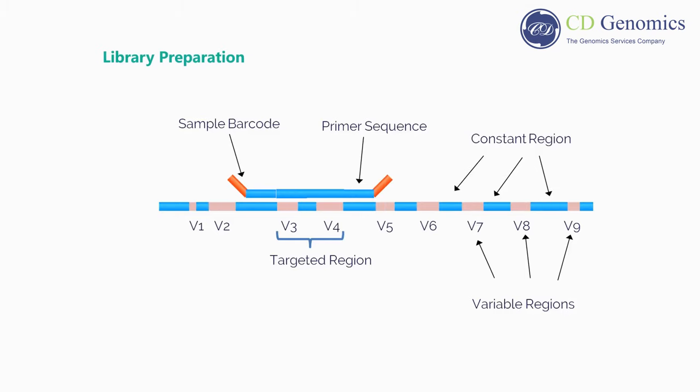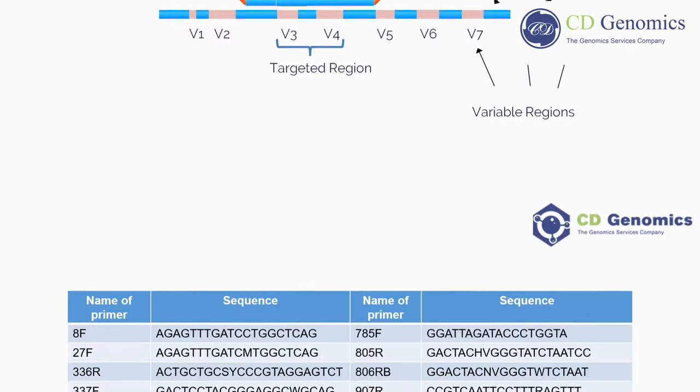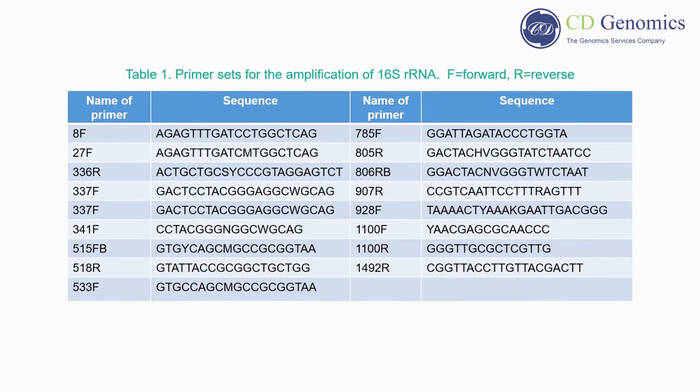Common next-generation sequencing platforms cover 100 to 600 base pairs per single read, with varying degrees of accuracy, but the full-length 16S ribosomal RNA gene consists of approximately 1500 base pairs. Therefore, primers are chosen to cover only a portion of the 16S ribosomal RNA gene. There are several primer pairs commercially available. The full-length 16S ribosomal RNA gene is usually amplified by the pair of primers 27F and 1492R, followed by Sanger DNA sequencing or PacBio SMRT sequencing.